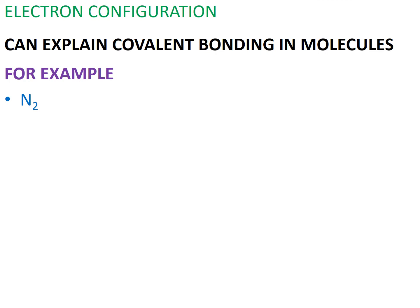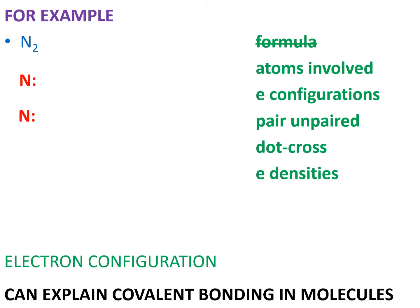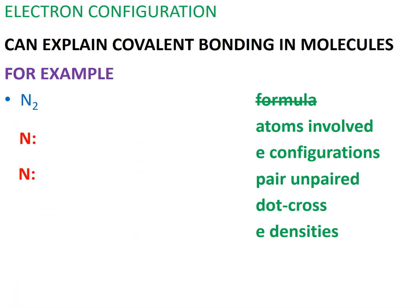Now let's look at a diatomic molecule and how multiple bonding can also be modeled using electron configuration. Nitrogen's chemical formula is N2, which means one molecule of nitrogen is made up of two nitrogen atoms covalently bonded together. Since we only have two atoms bonded together, there is no central atom in this molecule.